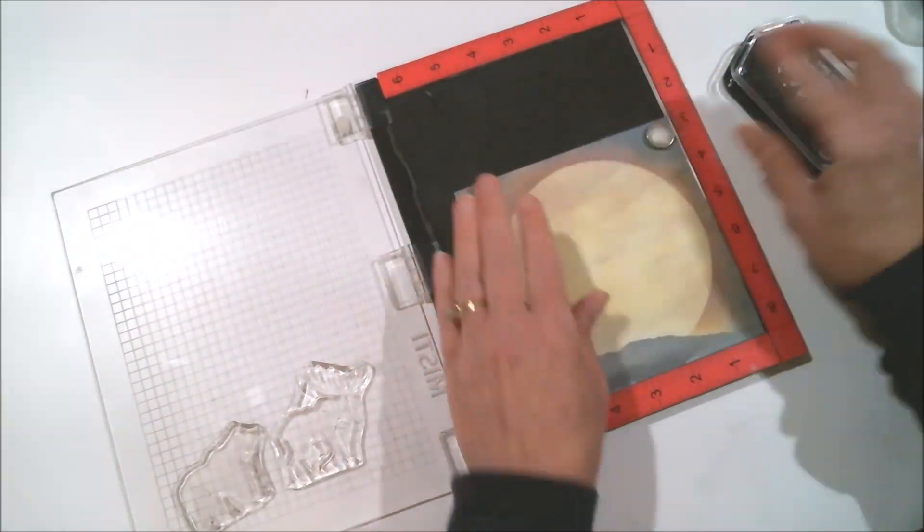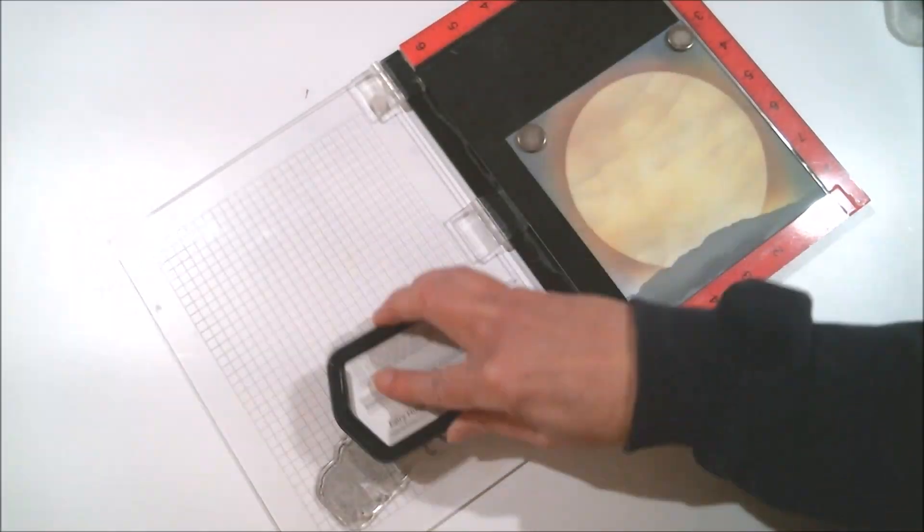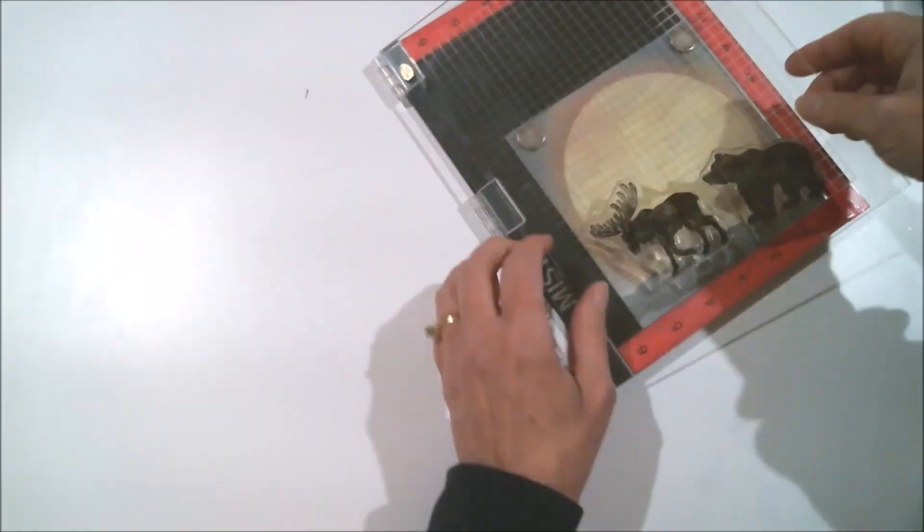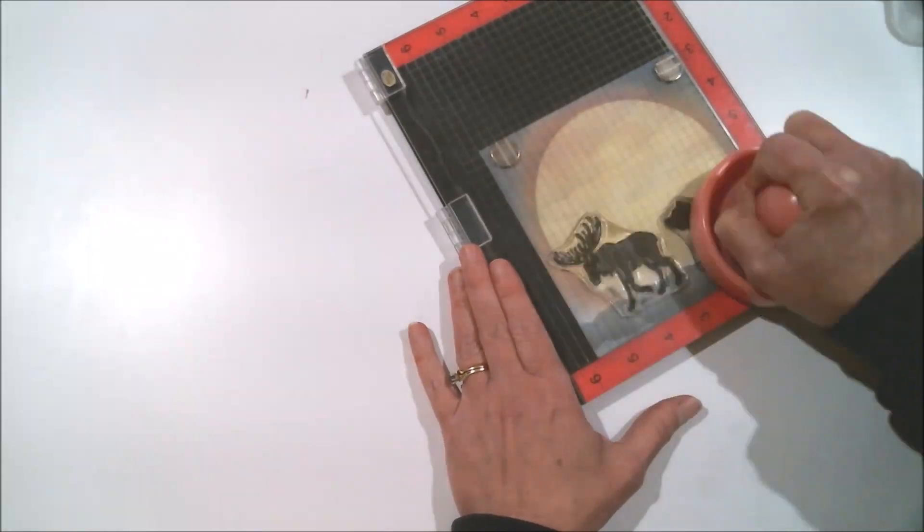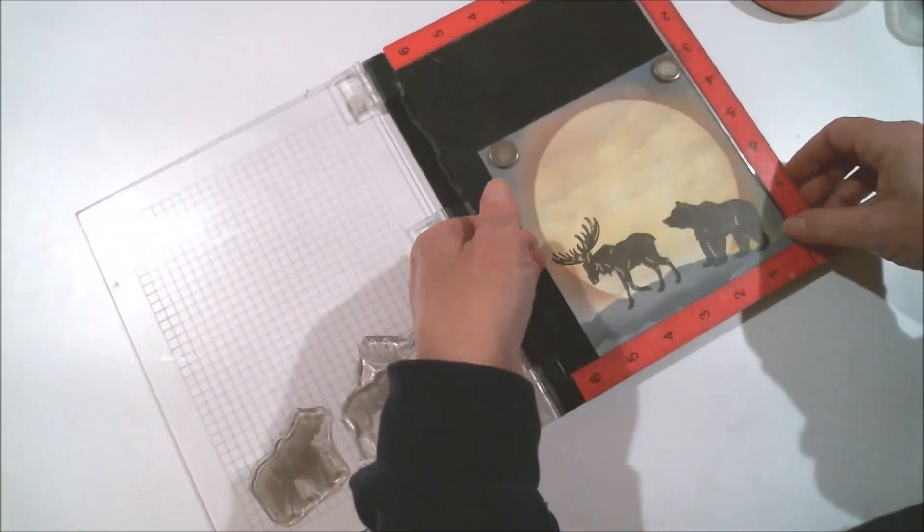So I've got the stamps lined up on the background where I want them and I'm going to ink them up and stamp them a couple of times. And then I'm going to be heat embossing them with the clear embossing powder.